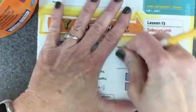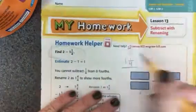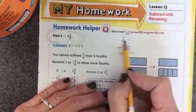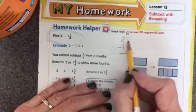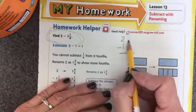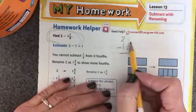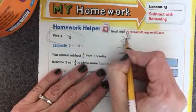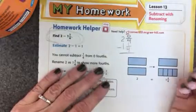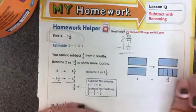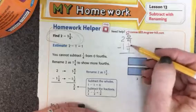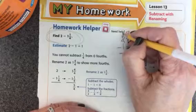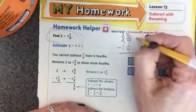So you know that the first thing we do is write it in a column. My whole numbers need to be straight here. So I have 2 minus 1 and 1 4th. So what I notice is I don't have a fraction here, so I can't subtract 1 4th. But I do have a fraction here, we just don't write it. The fraction is 0 4ths. 2 and 0 4ths means the very same thing as 2. I can't do 0 minus 1, so I need to borrow. So I'm going to borrow from this 2 and I'm going to take that whole number and put it right here.